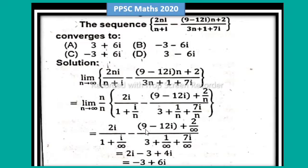so take minus multiples of minus 3 plus 4i, so 4i plus 2i is equal to 6i, so minus 3 plus 6i, option C is correct, that is minus 3 plus 6i,